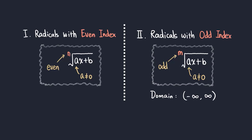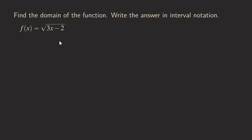Now let's look at the examples. Our first function is the square root of 3x minus 2. This is a square root, and as we just talked about, we are going to find the set of all x values so that 3x minus 2, the inside expression, will be non-negative. So we write 3x minus 2 greater than or equal to zero, and then we solve this inequality by isolating x, since this is a linear expression.